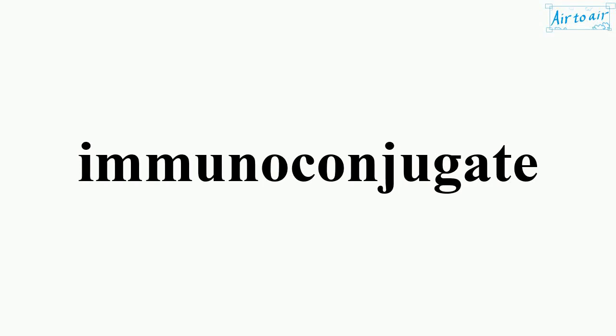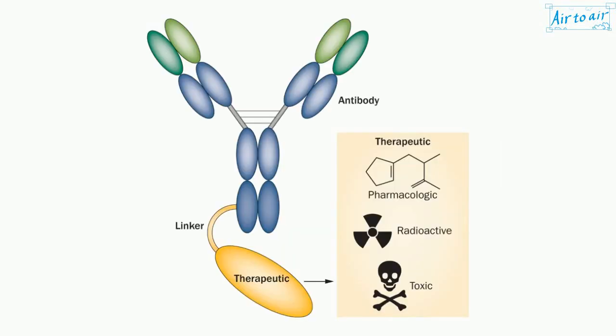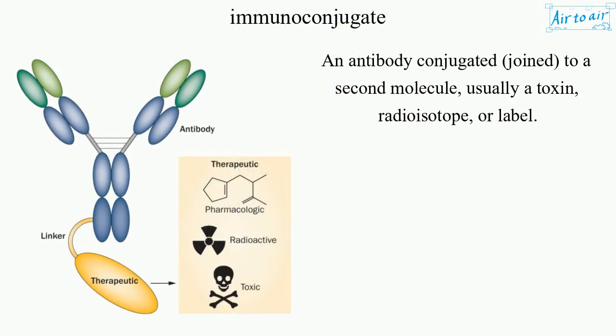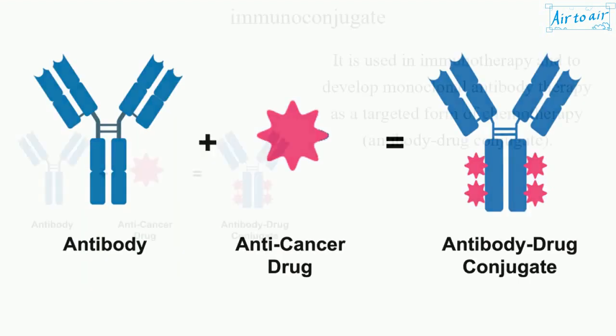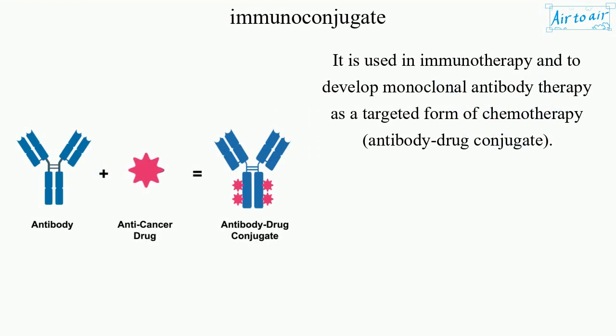Immunoconjugate: an antibody conjugated, joined, to a second molecule, usually a toxin, radioisotope, or label. It is used in immunotherapy and to develop monoclonal antibody therapy as a targeted form of chemotherapy, known as an antibody-drug conjugate.